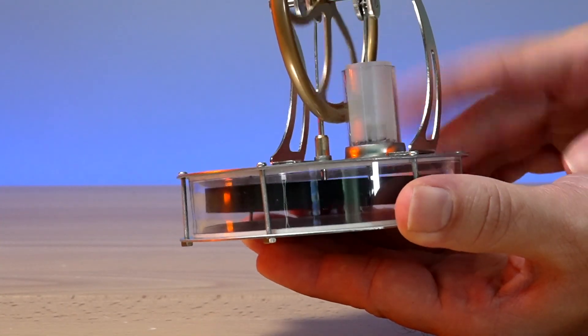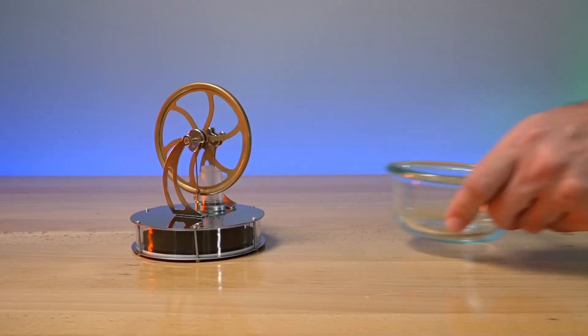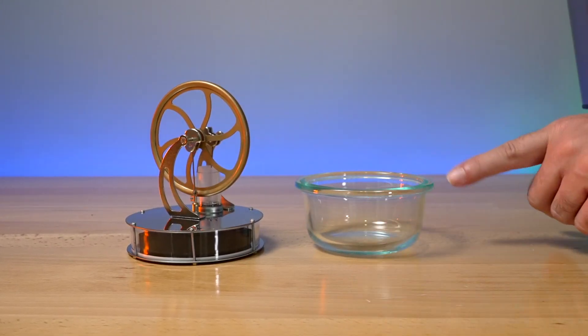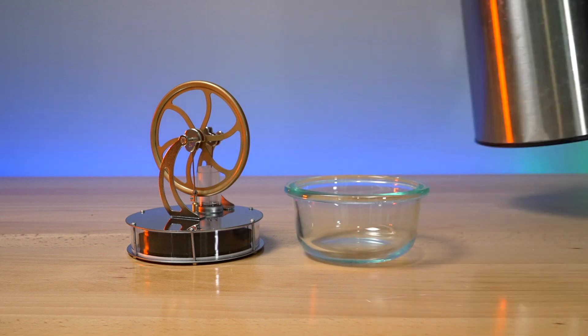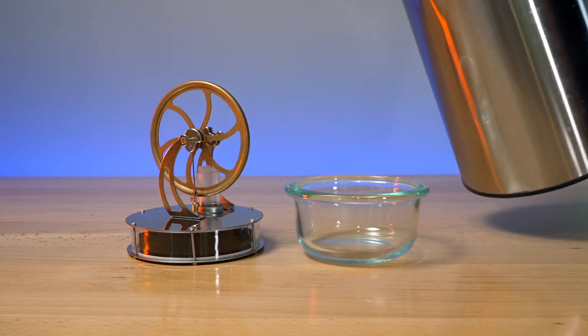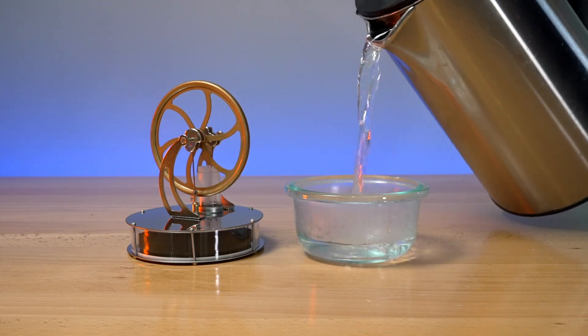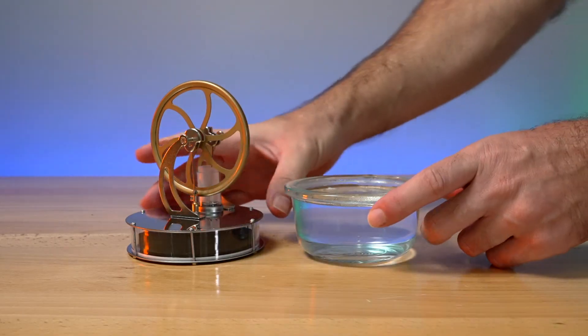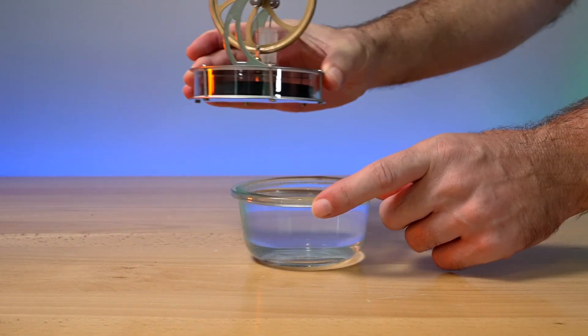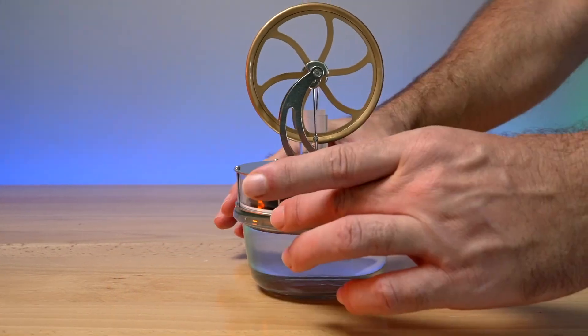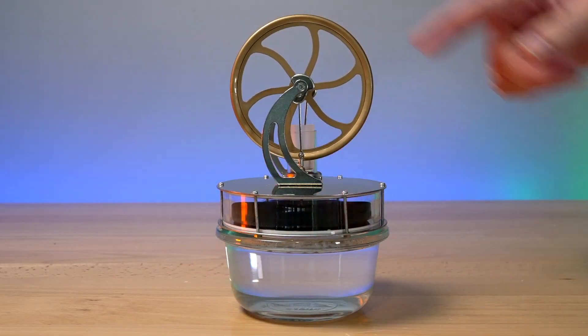So instead of a cup, I'm using a little bowl here that's made out of glass so we can see the water. I got boiling water, so let's go ahead and pour that in there. I think all we got to do now is just set the engine on top of that. It seems to fit pretty good here.